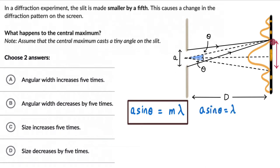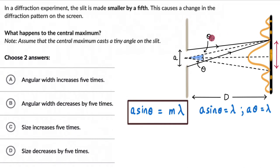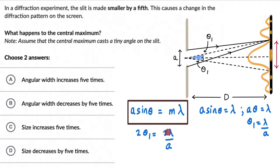The first minima is formed where the central maximum ends. Since the note says the central maximum casts a tiny angle on the slit, this entire angle is tiny, so we can approximate sin θ as θ. We write A·θ = λ, and for this first order minima we call this angle θ₁, so θ₁ = λ/A. The angular width of the central maximum is double this: 2θ₁ = 2λ/A. This is the angular width of the central maximum.